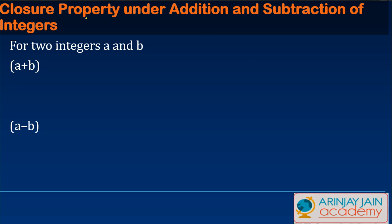In this video I am going to tell you about the closure property under addition and subtraction of integers. First, what does this closure property mean? For two integers, let's say a and b,